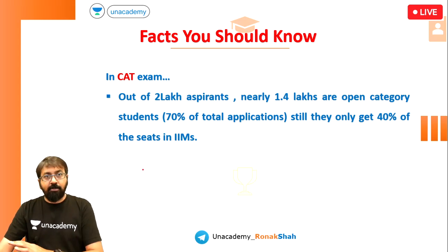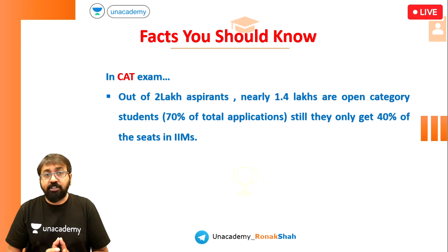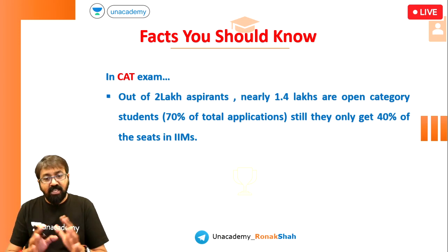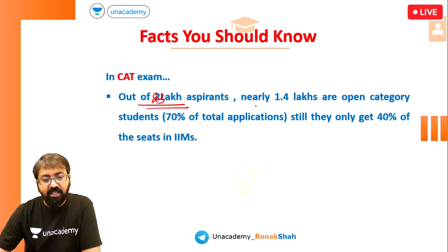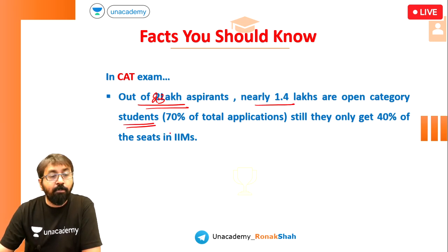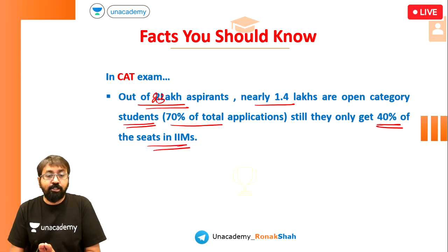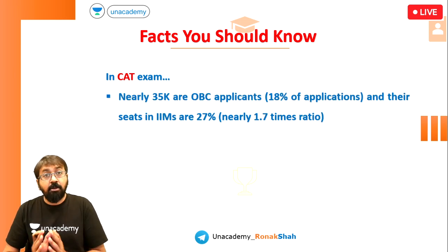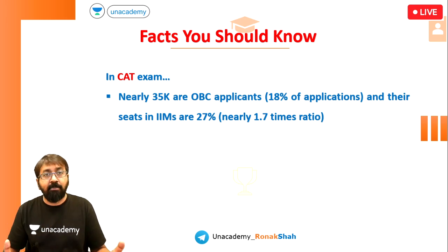Now coming back to the point — based on the data we received, the category-wise breakup of the number of applicants and number of seats in each IIM is known. Out of about 2.3 lakh aspirants, nearly 2 lakh appeared, and nearly 1.5 lakh are from the open category. That is 70% of applicants, yet they get only 40% of the total seats in IIMs. So open category students are huge in number but have just 40% seats. The remaining 60% seats are reserved.